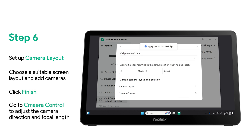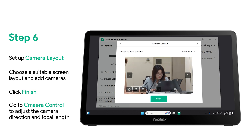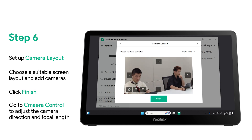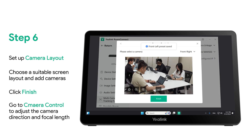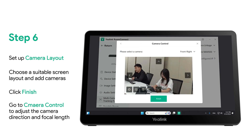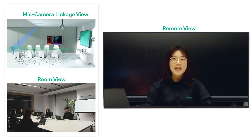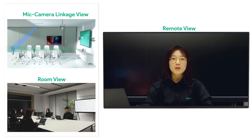Go to camera control to adjust the camera direction and focal length. Here is the demonstration. Now we are going to demo the Yeelink Shure Mic and Camera Linkage solution in action. The image you can see at the far end is Yeelink's multi-camera image, which can be set on the touch panel. When I start talking, the position information detected by the Shure microphone will be transmitted, and the image will be focused with a close-up given to the speaker.